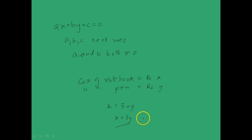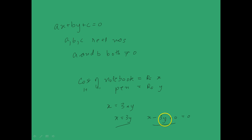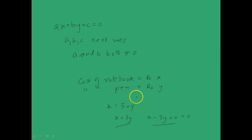This can be rewritten as x minus 3y plus 0 is equal to 0. In this representation you can clearly see how this is a linear equation in two variables where a is equal to 1, b is equal to minus 3, and c is equal to 0. Hence you can see how useful linear equations in two variables are while modeling real-world problems.